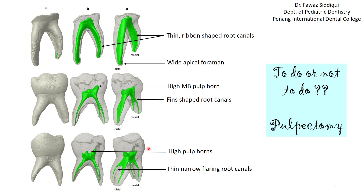Pulpectomy is a challenge — we can damage the periapical area, leave pulp tissue remnants in fin areas, and fail to negotiate narrow canals. Some colleagues from the Western world prefer extraction because the chances of infection or relapse are quite high, especially in chronically inflamed pulp with chronic periapical abscess. Colleagues from India prefer to do pulpectomy and try to save the tooth. Patient characteristics differ between the Western world and Asia, which accounts for differences in treatment preference. Nothing is absolutely right or wrong — it all depends on case selection and expertise.